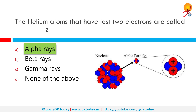An alpha particle is made up of two protons and two neutrons, all held together by the same strong nuclear force that binds the nucleus of any atom.